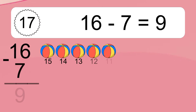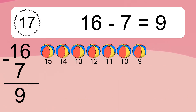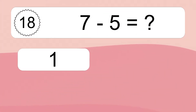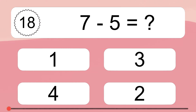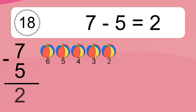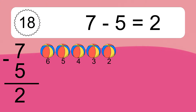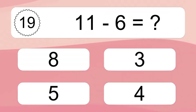16 minus 7 equals 9. Let's count it. 15, 14, 13, 12, 11, 10, 9. 7 minus 5 equals what? 7 minus 5 equals 2. Let's count it. 6, 5, 4, 3, 2.